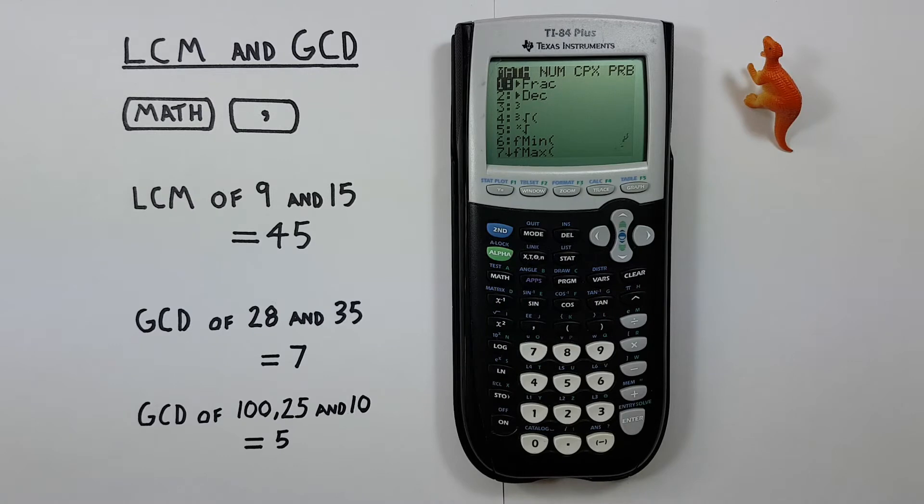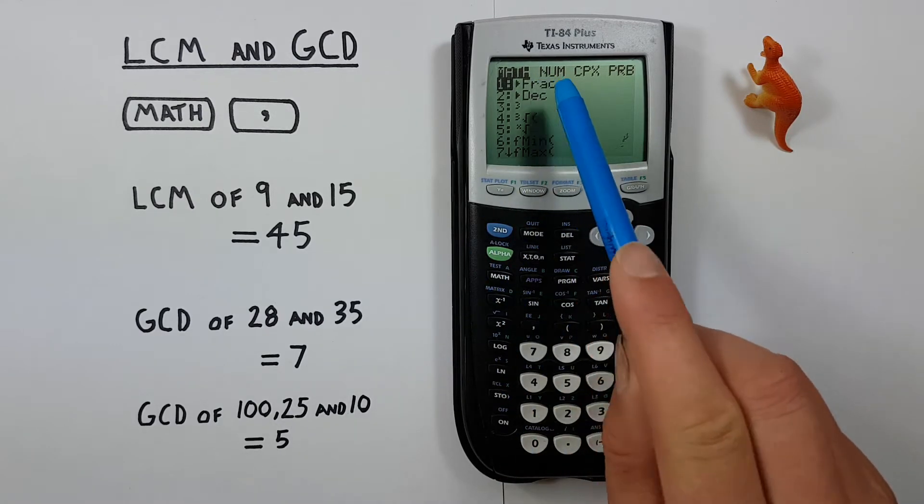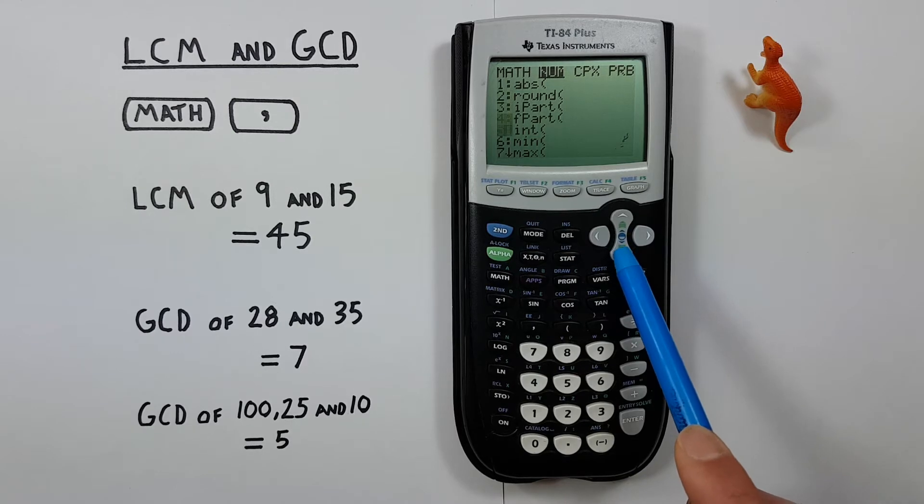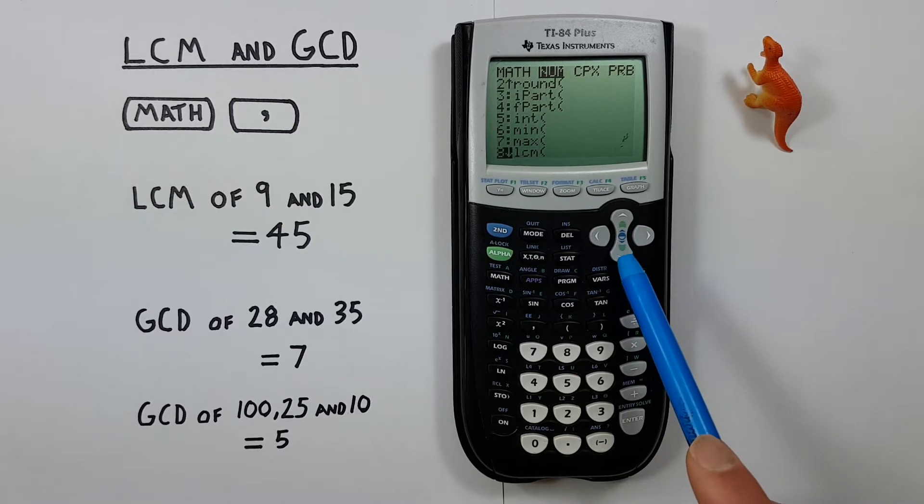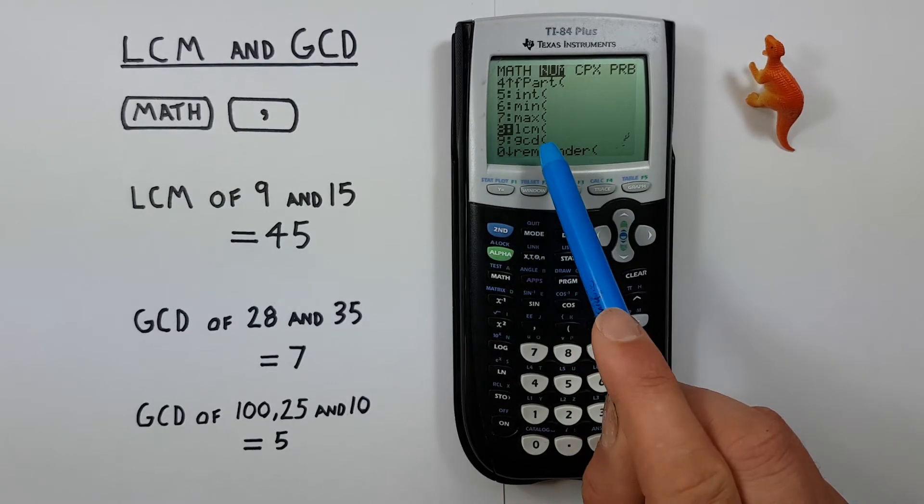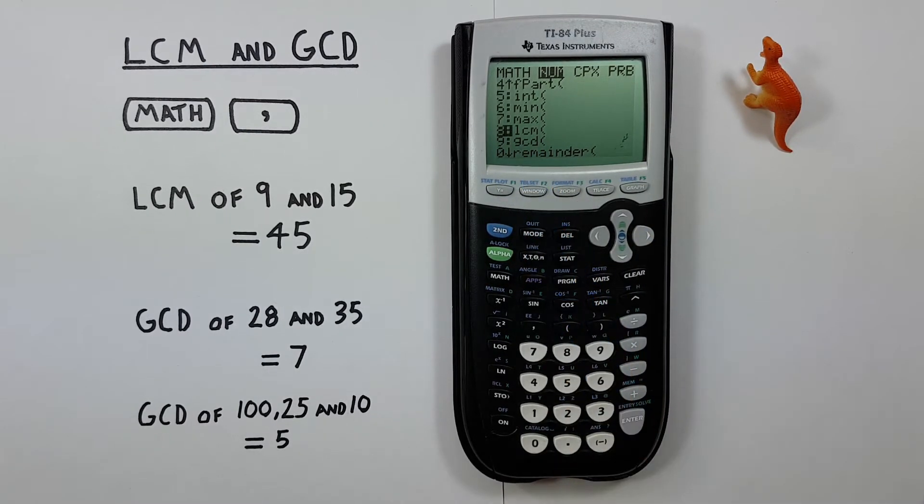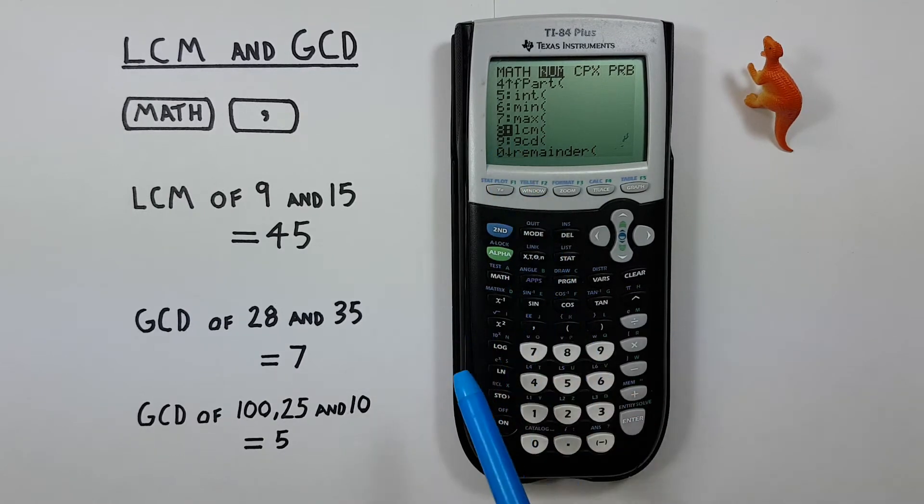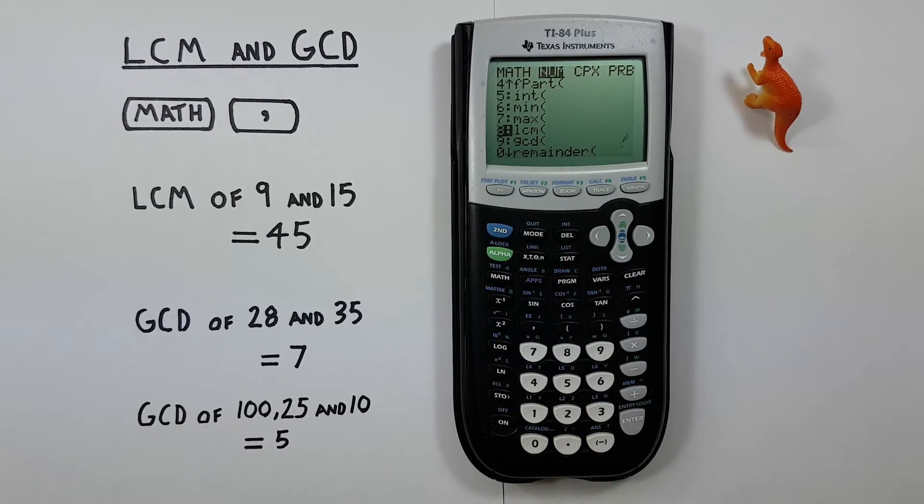Scroll over to num, and then we want to scroll all the way down to the next screen until we get to number 8 here, which we see as LCM. So we can either press enter when 8 is highlighted, or press 8 on the keypad. We'll just hit enter here.